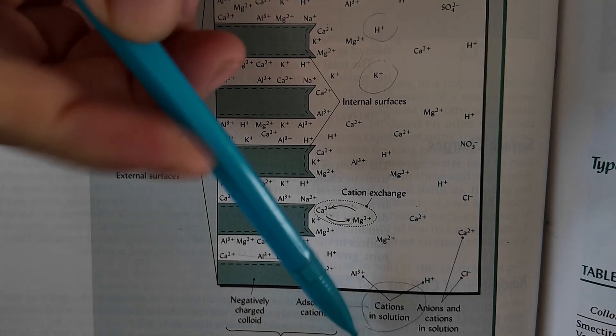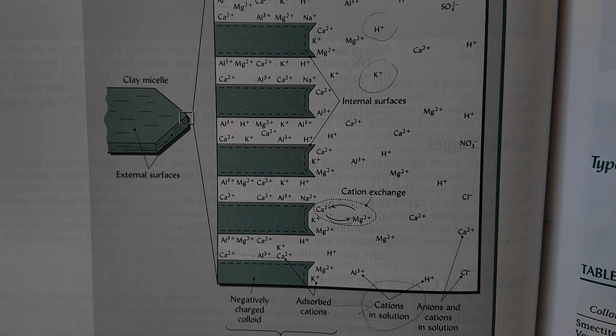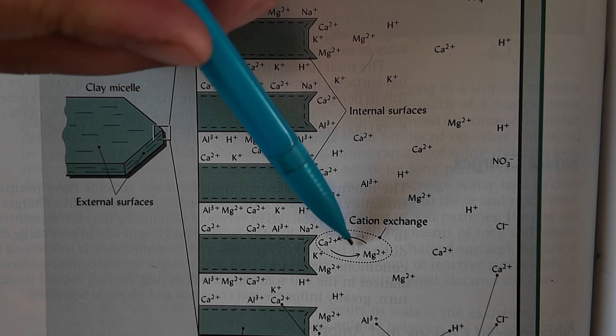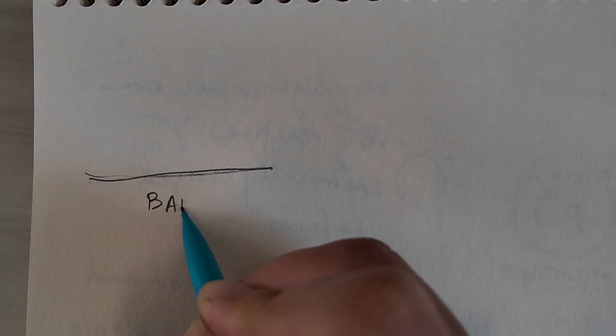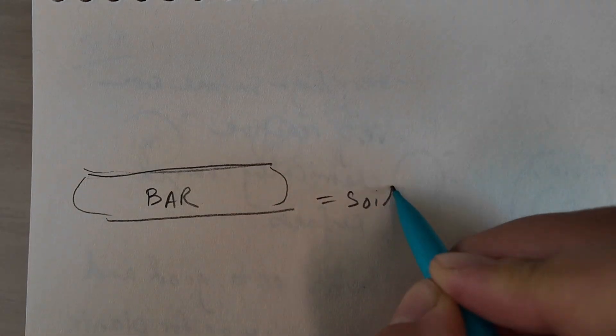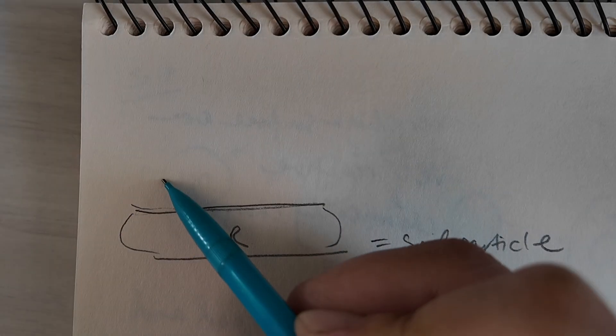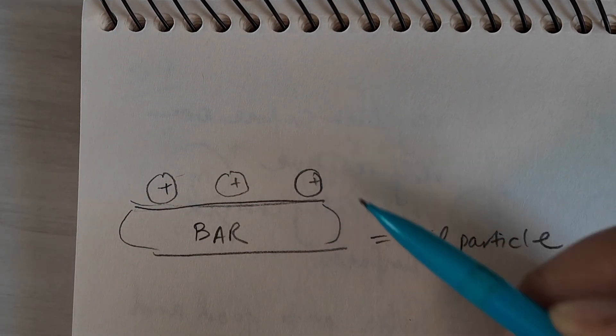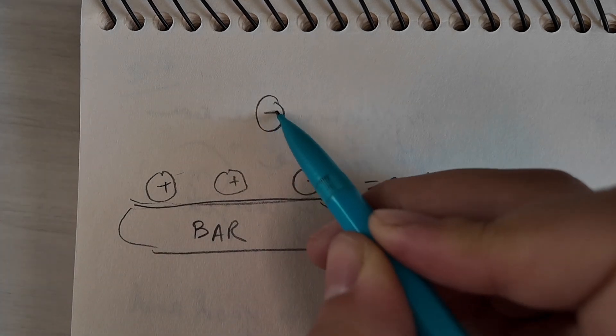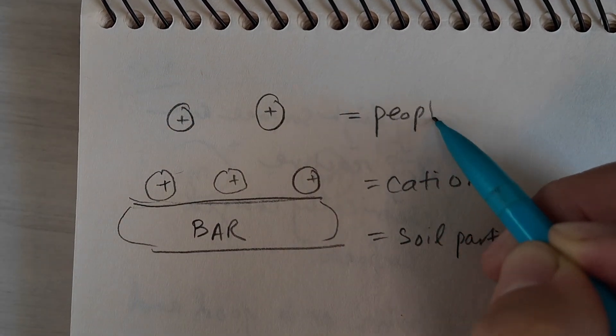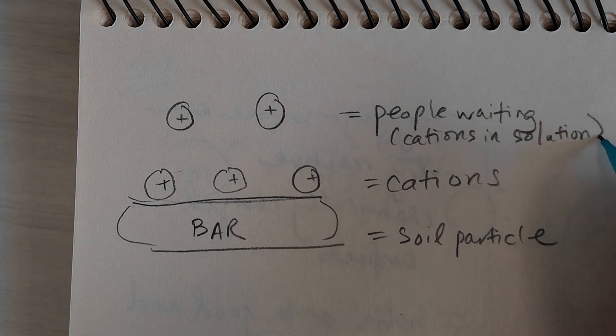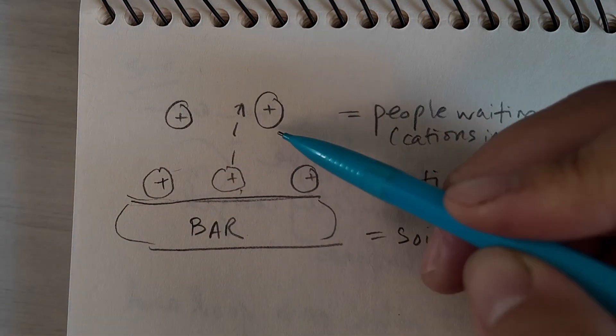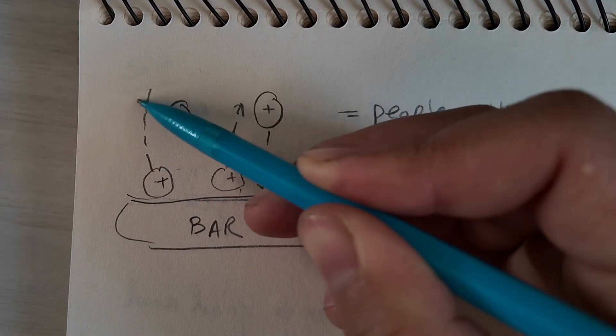You can see here that there's cations that are on the surface of the particle that then exchange with the ones in soil solution. If you're having some difficulty wrapping your head around this, think of it like a bar. The surface of that particle is the actual bar. And the cations are the people who are trying to get a drink. They can come and go as they please. And they do come and go. And when they move away, they get replaced by somebody else. And that's the same idea with these cations.